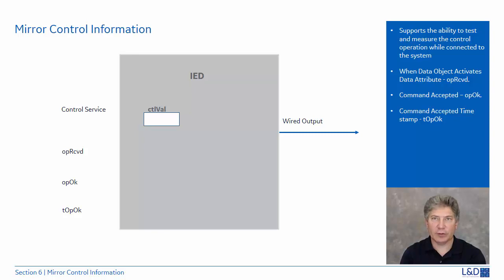The feature of mirroring of control information was added to IEC 61850 Edition 2. This supports the possibility to test and measure the performance of a control operation while the device is connected to the system.